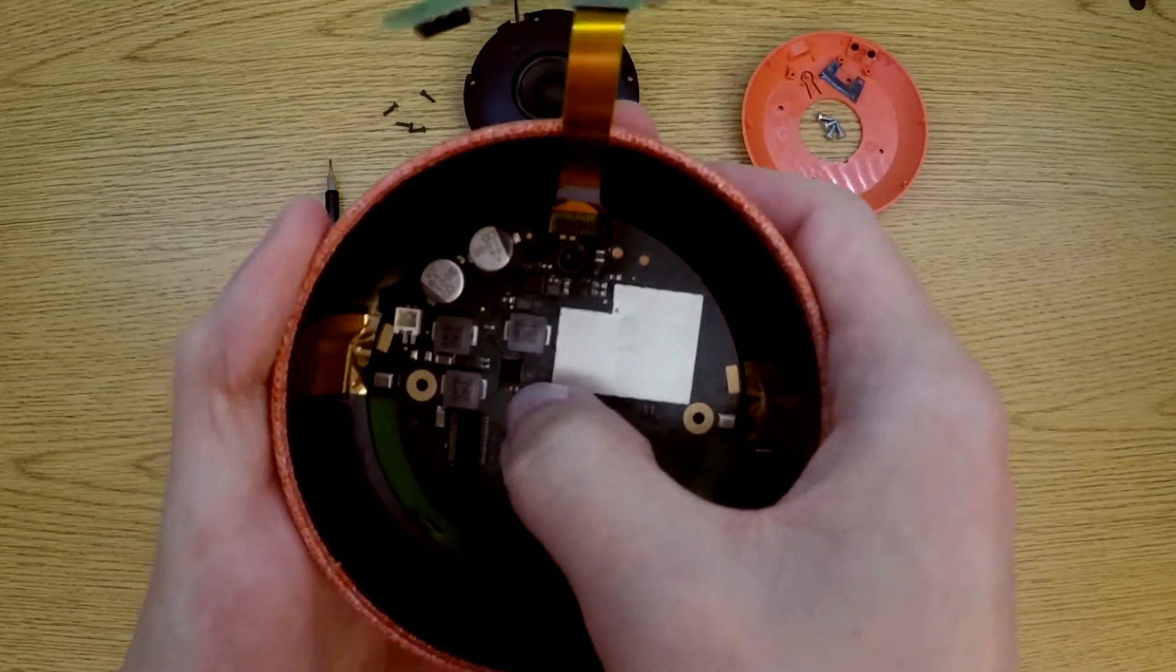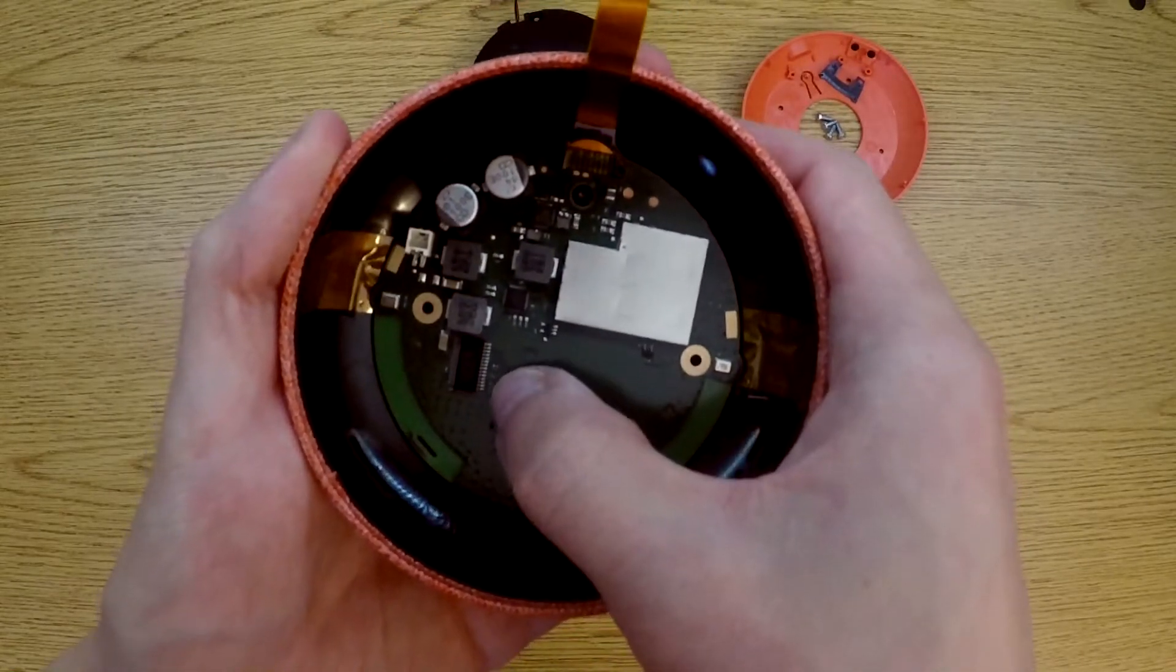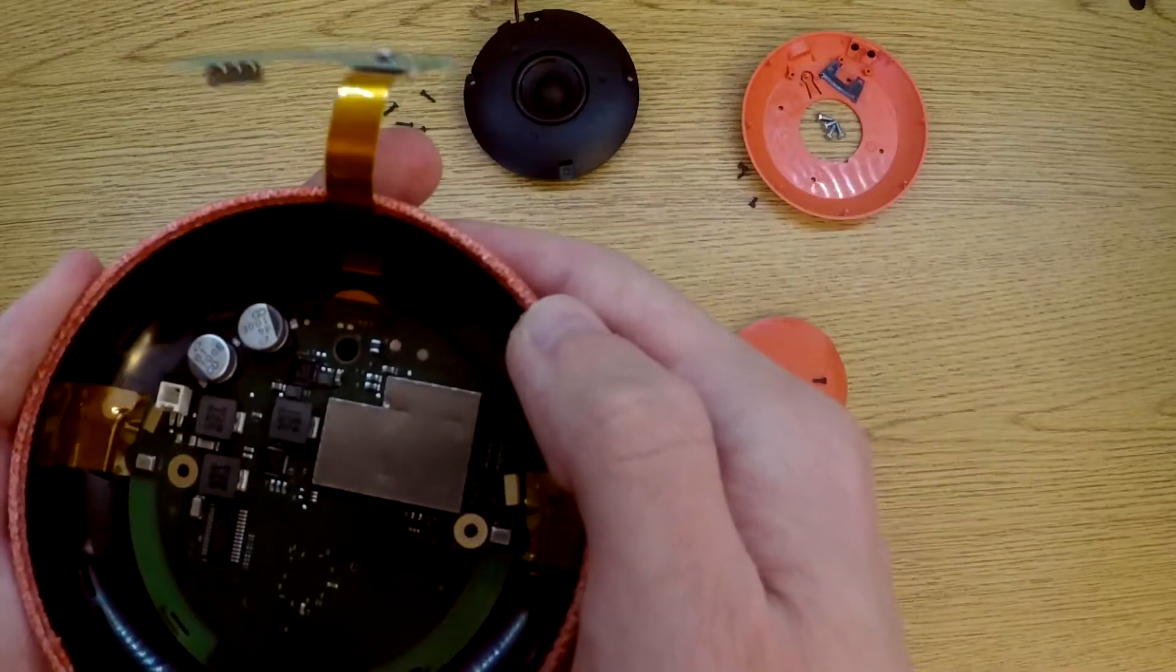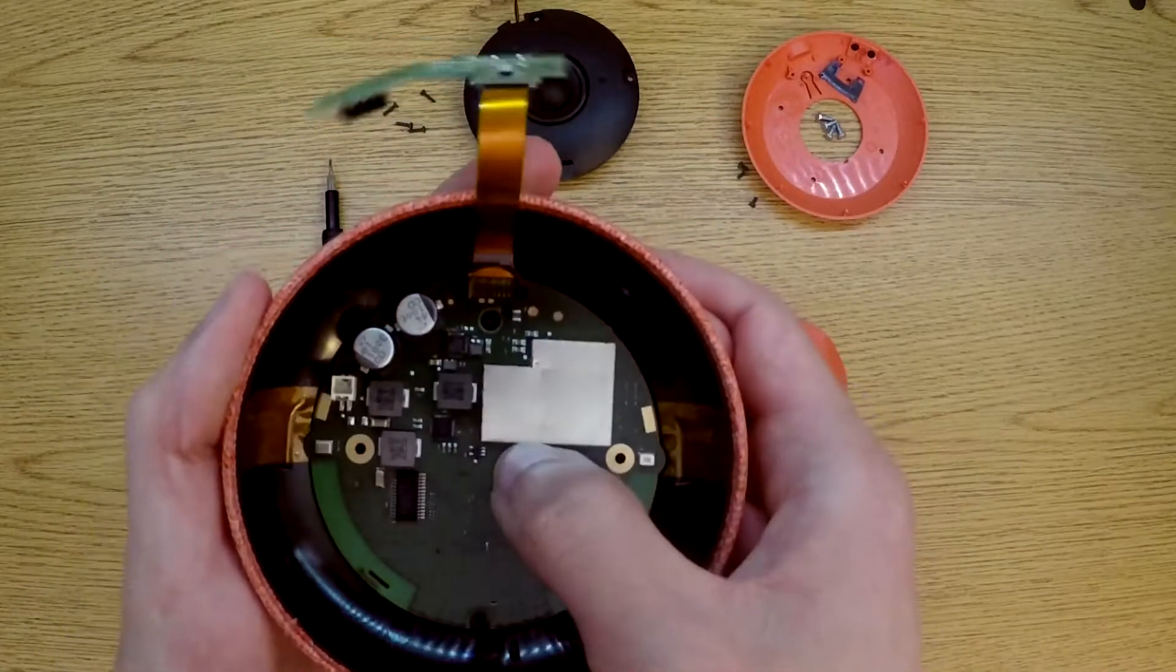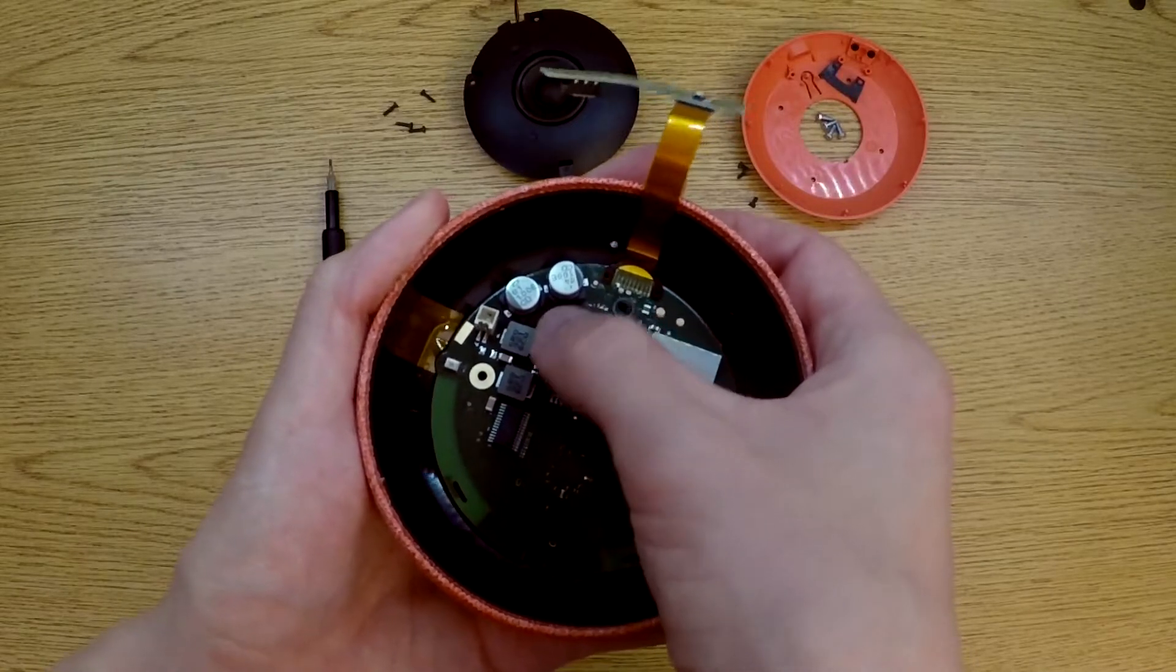So here are the processing chips that control the sound and voice recognition. This is a protective plate for some of the more delicate chips. These two are the power of the device.